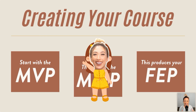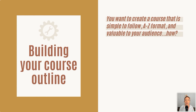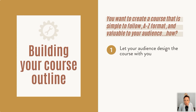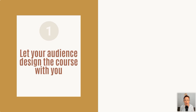Now, how can you actually create each of these versions and build out your course? Let's build your course outline. Ideally you want to create a course that is simple to follow in an A-to-Z format and valuable to your audience — from beginner to expert. But how do you get everything in your brain onto a course and communicate it to students in a cohesive way? There are three approaches: let your audience design the course with you, do a sticky note brain dump, and get organized from the very beginning.